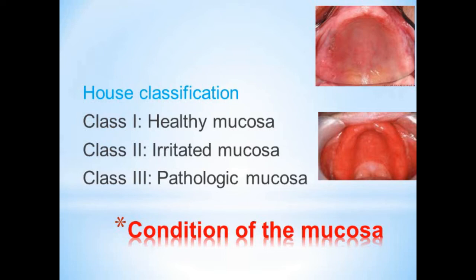In cases of irritated mucosa, corrective surgical measures must be instituted before impression procedures are started. Then comes pathologic mucosa — for example, leukoplakia, which is a pre-malignant condition manifested as white patches especially on the mucous membrane of the lips, tongue, and cheeks. All these have to be examined.